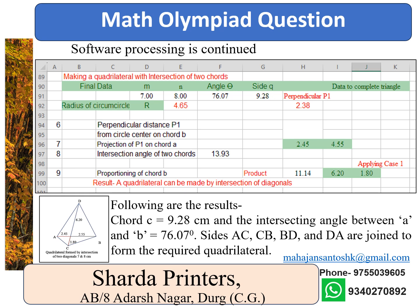Sides AC, CB, BD, and DA are joined to form the required quadrilateral. All candidates preparing for math olympiad through our online training classes need to answer the above question as a home assignment.